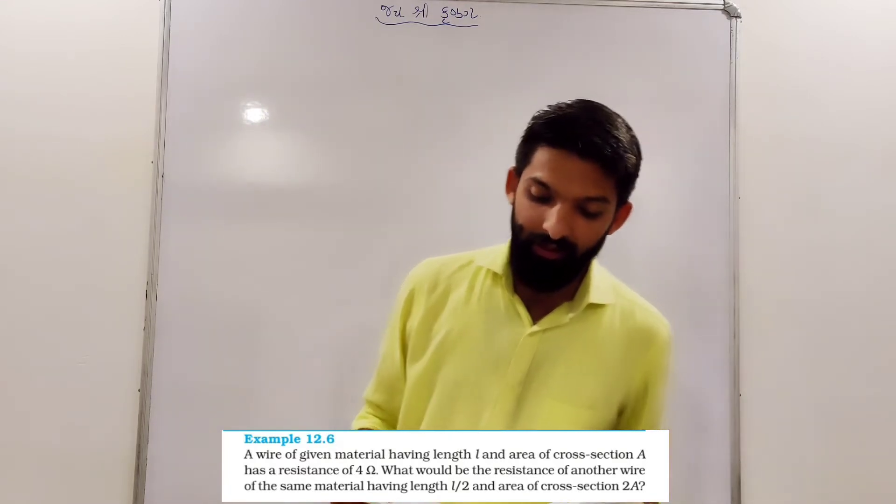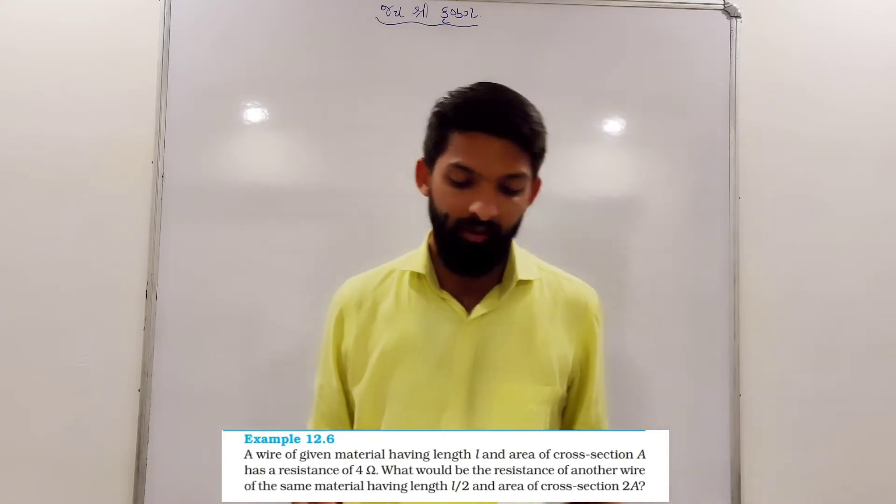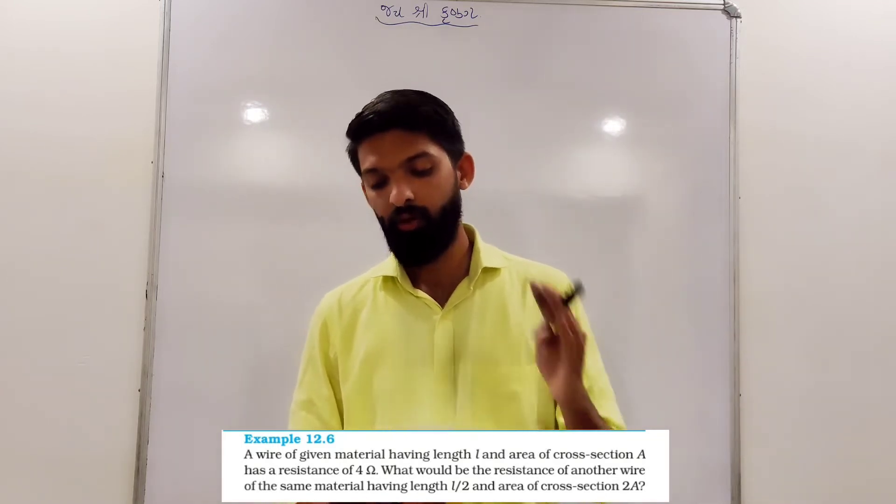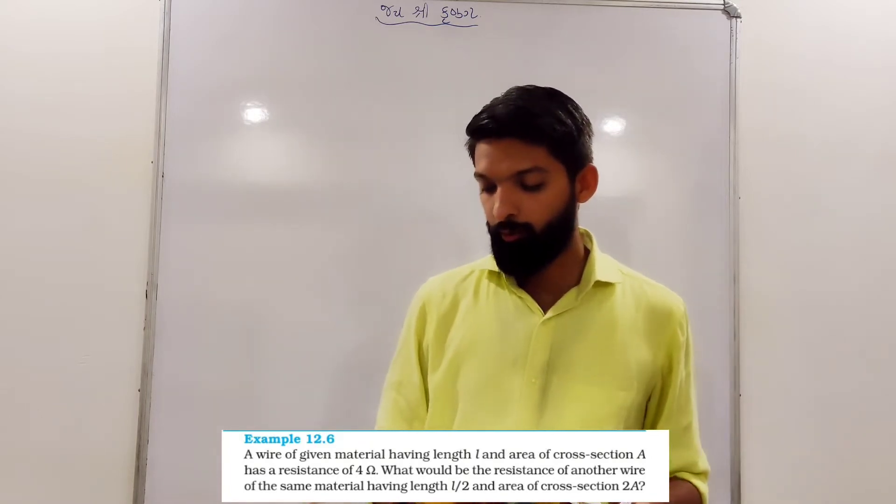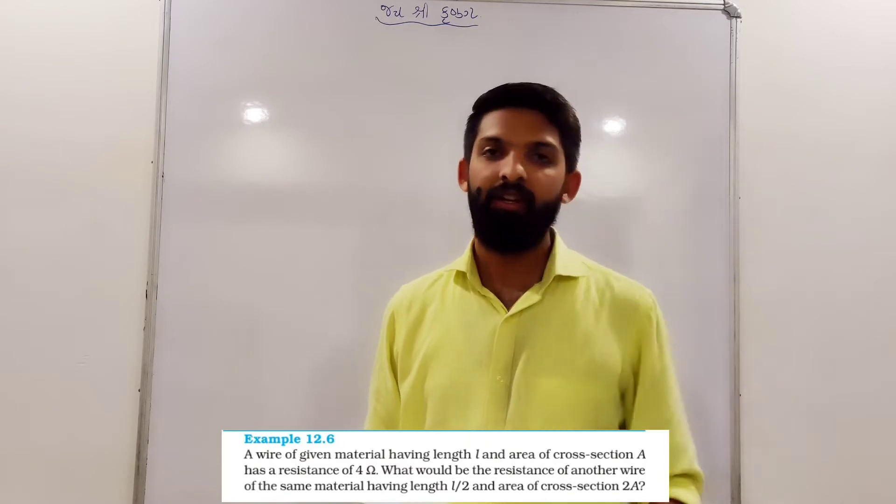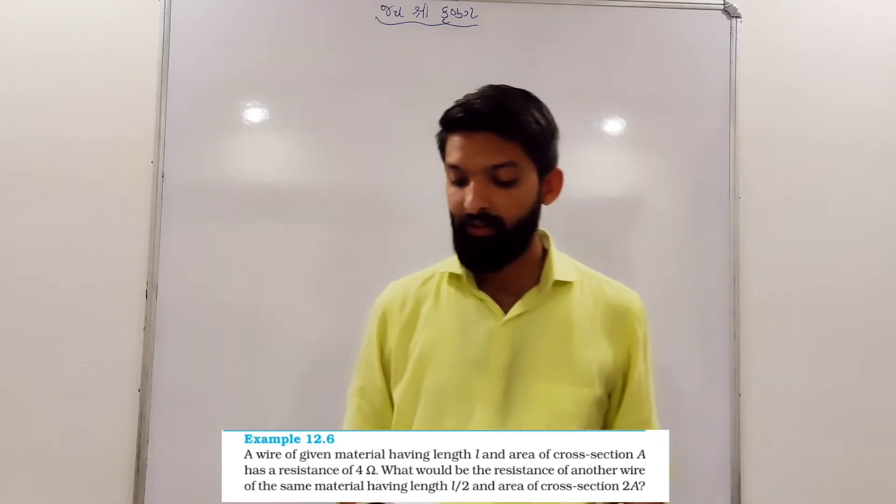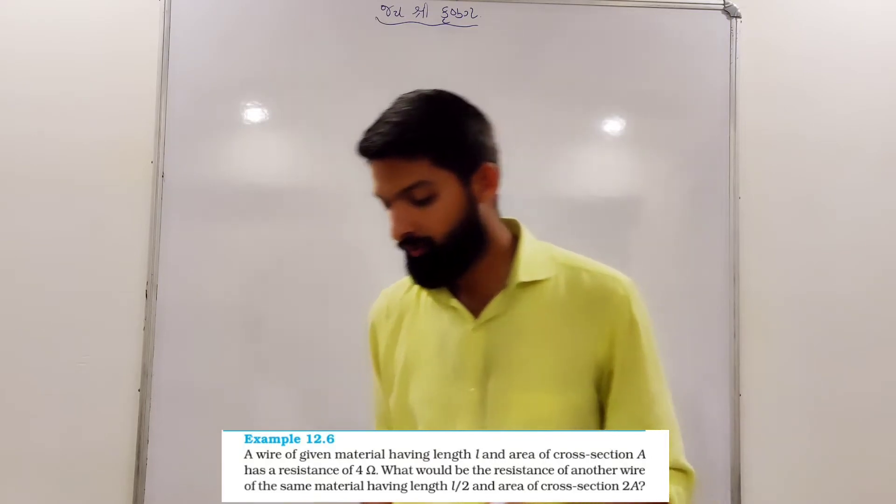A wire of given material having length L and area of cross section capital A has a resistance of 4 ohm. What would be the resistance of another wire of the same material? The same material is very important. Having the length L by 2 and area of cross section 2A.